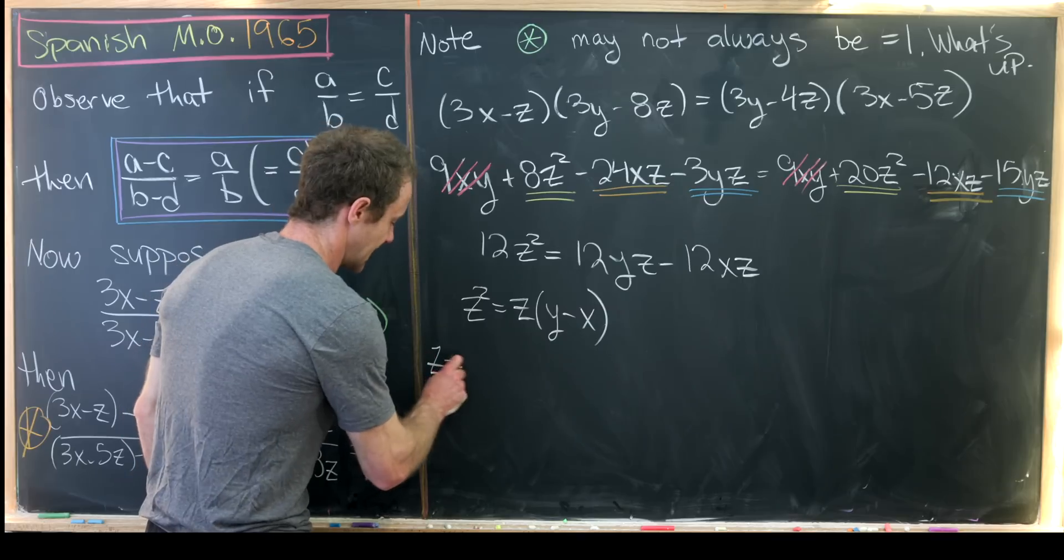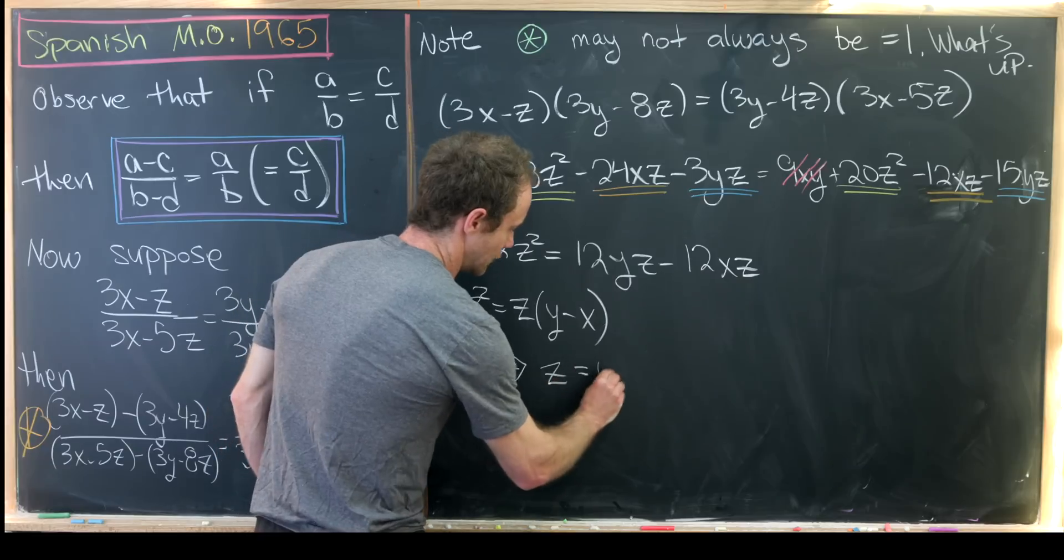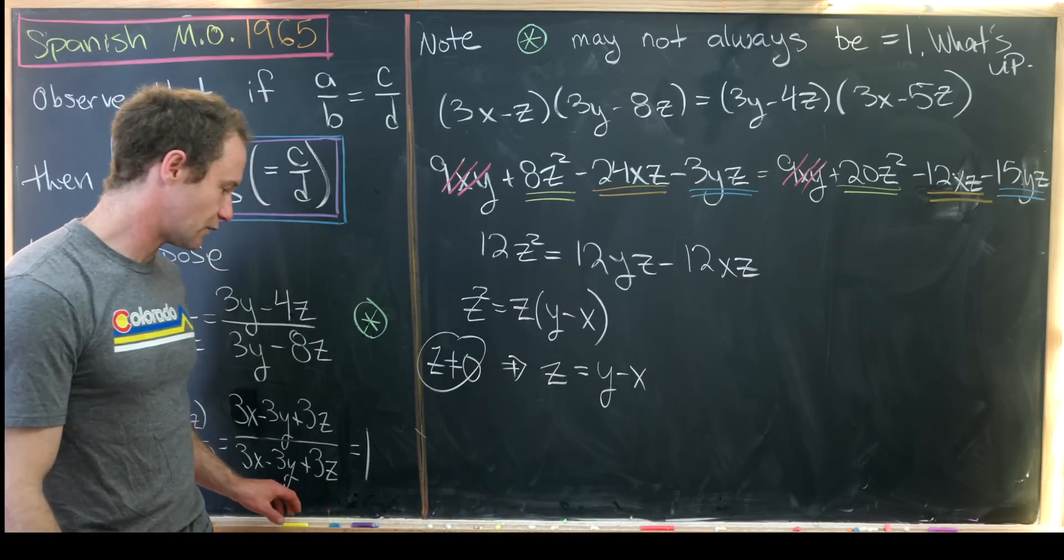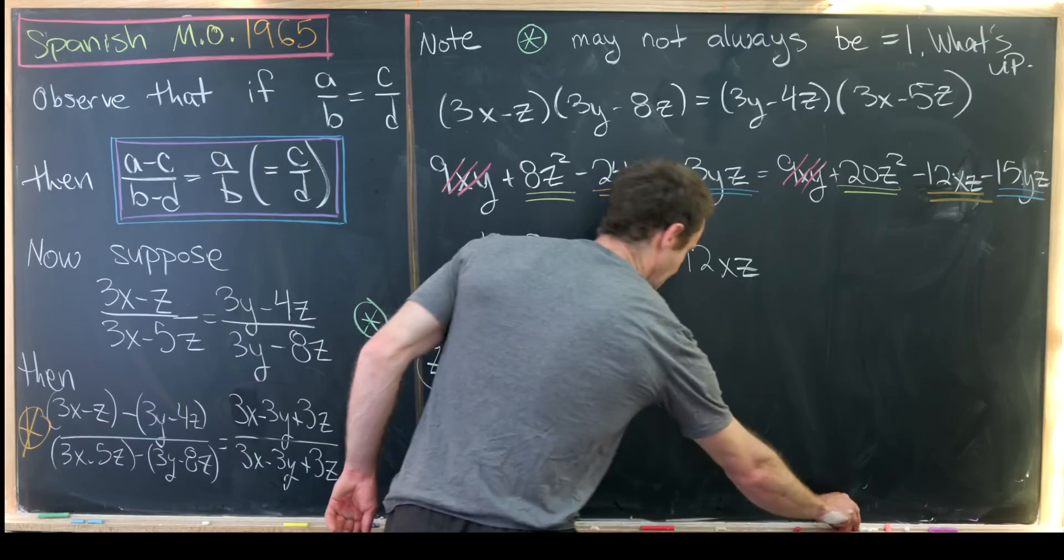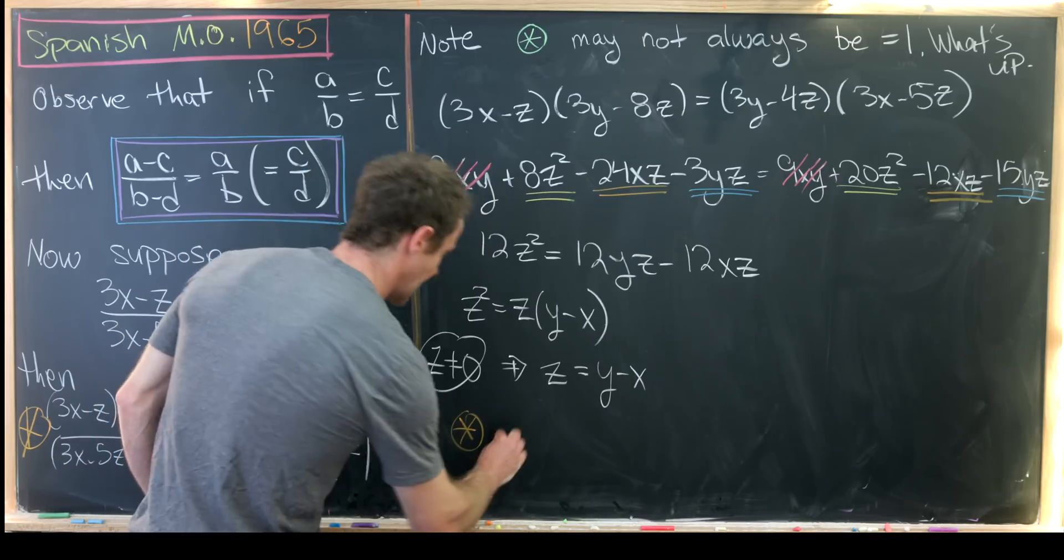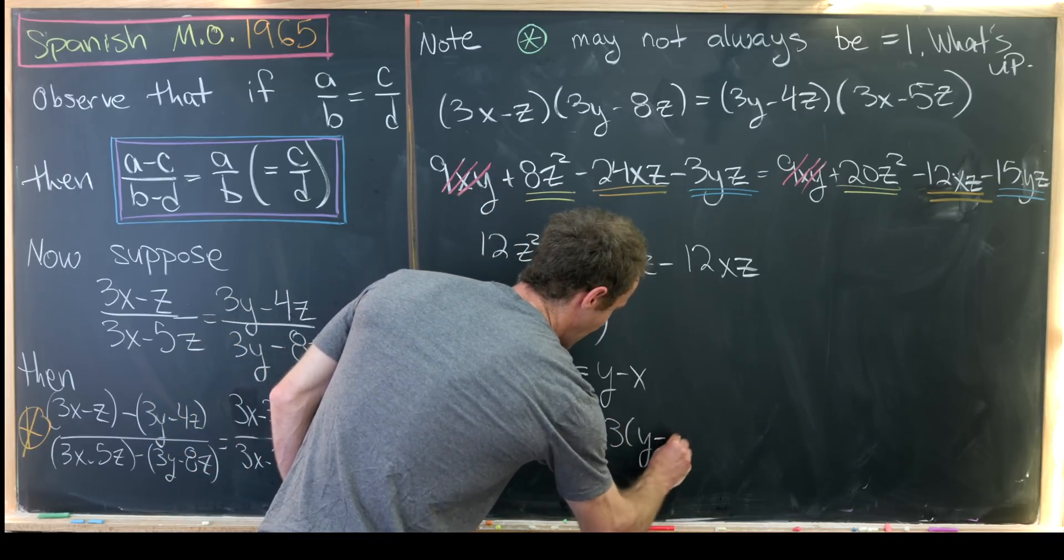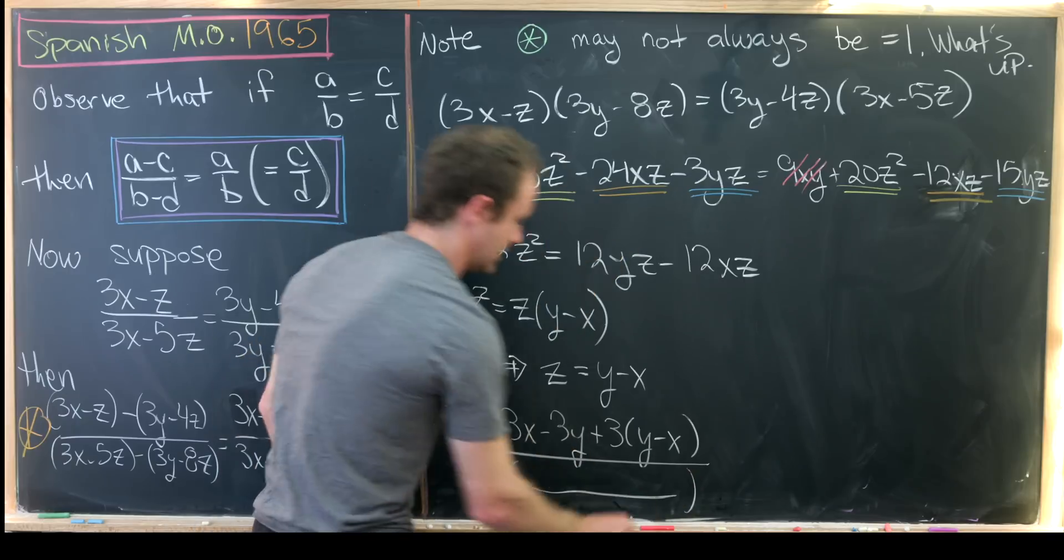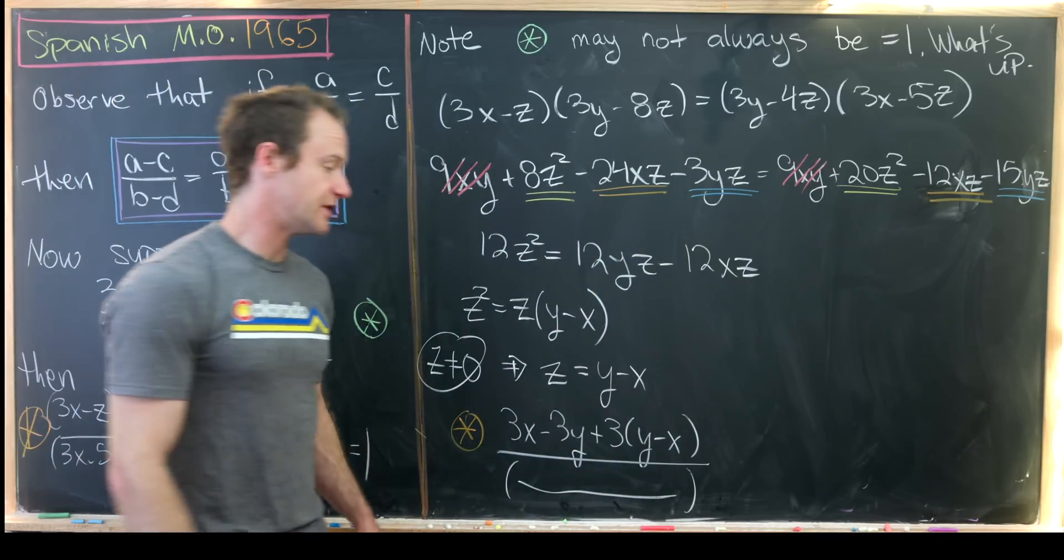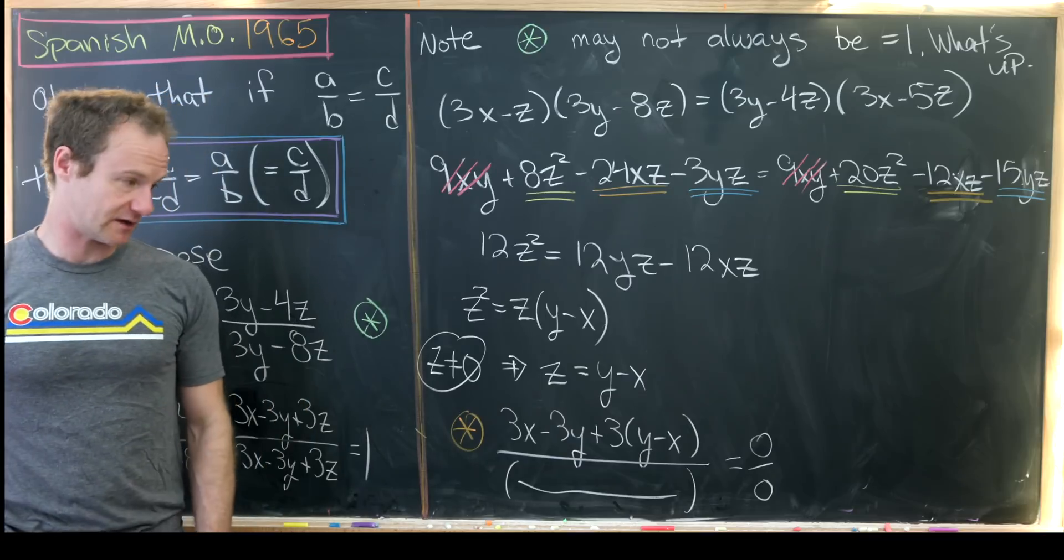So let's look at the case when z is not equal to 0. That means we can divide z from both sides and give us z equals y minus x. Then we can take this z equals y minus x and plug it into this orange starred equation over here.